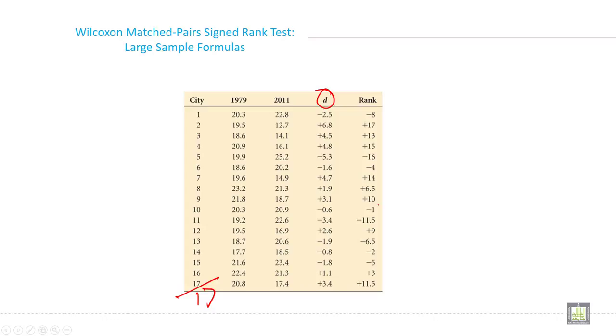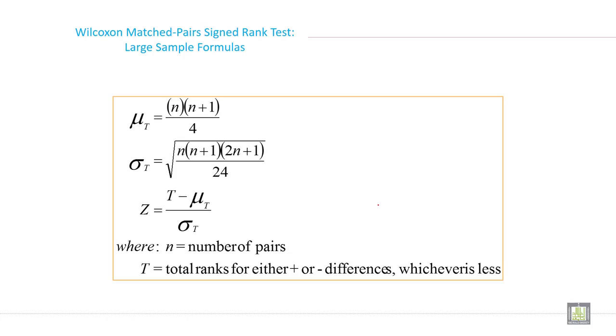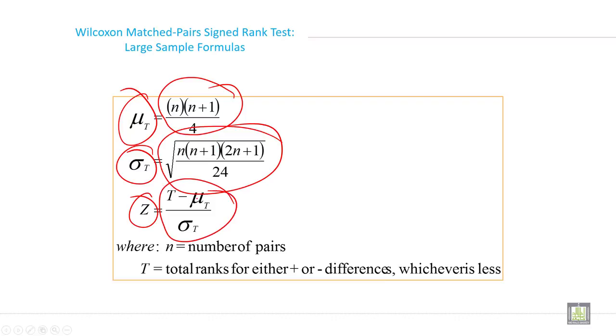Now you know how to put the rank, so just calculate the rank. Then try to calculate mean, mean of the rank and standard deviation of the rank and the Z value of the rank. This is the formula to calculate mean of the rank and this is the formula to calculate standard deviation of the rank and Z value formula is this.